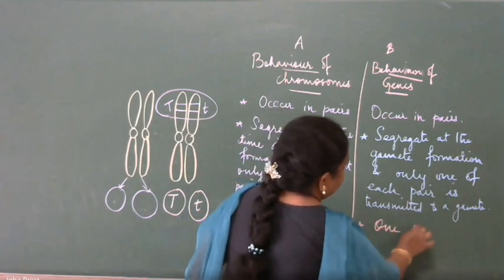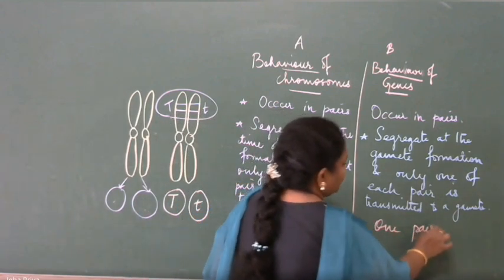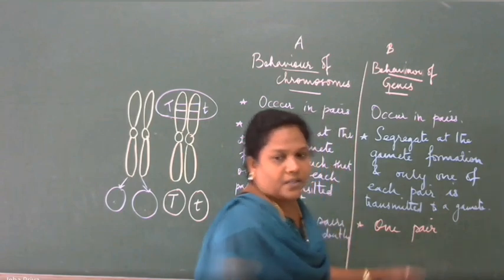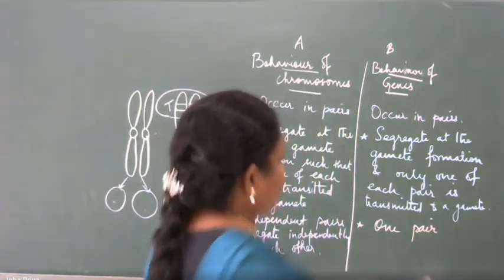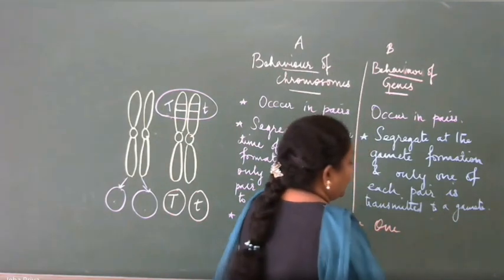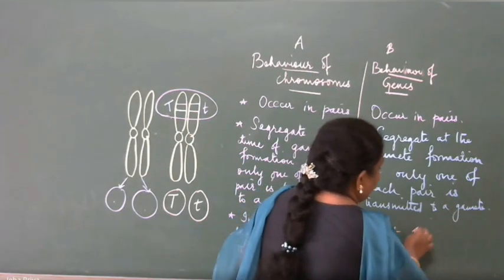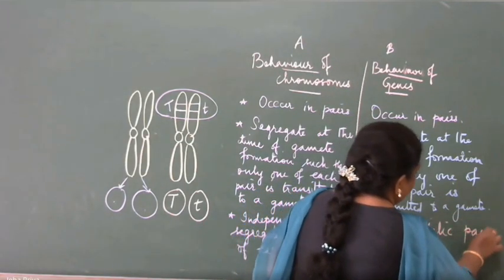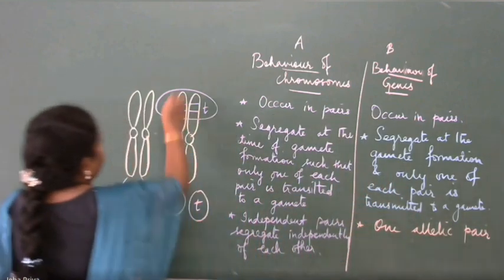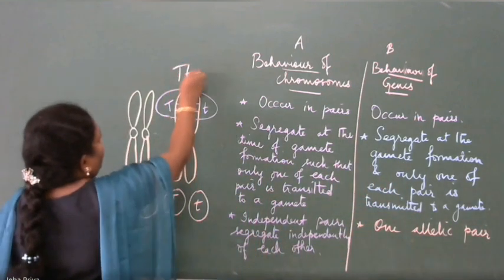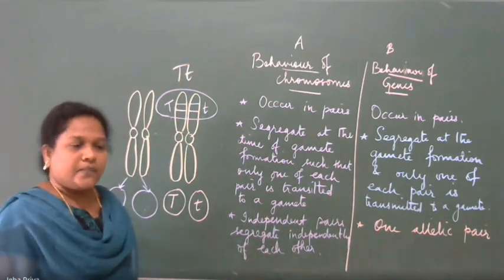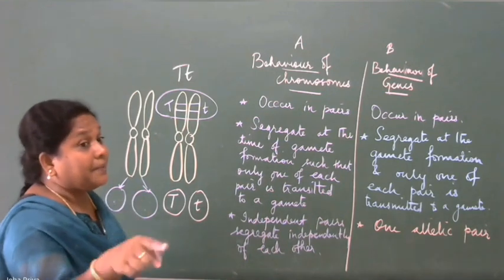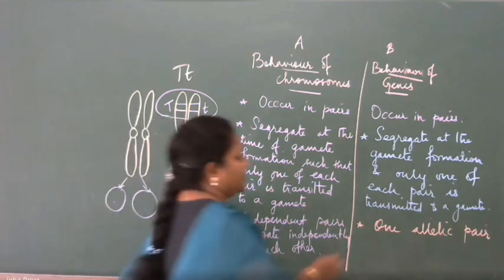One allelic pair — or one allelic pair. What is an allelic pair? We are talking about capital T and small t watching each other. One allelic pair segregates independently of another pair.